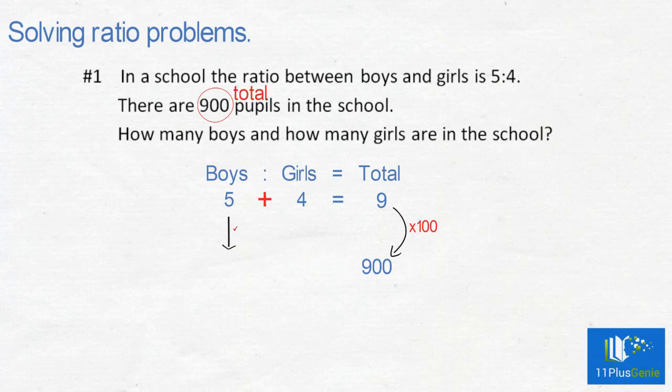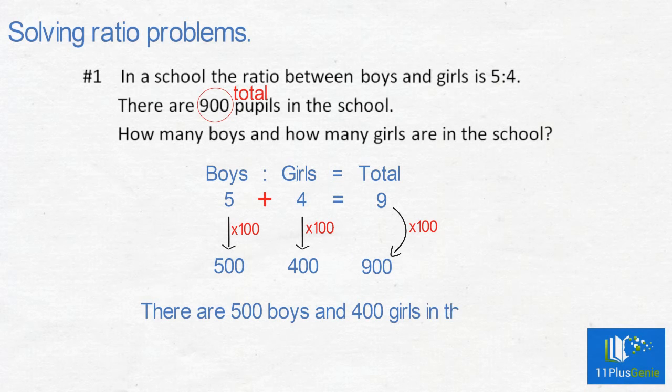So we must times the boys by 100 and the girls by 100. 5 times 100 equals 500 and 4 times 100 equals 400. There are 500 boys and 400 girls in the school.